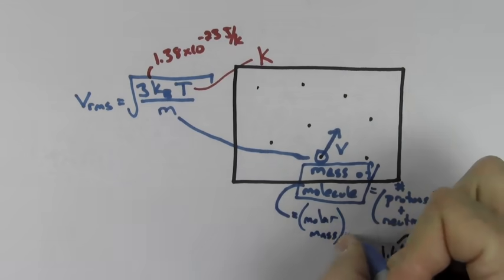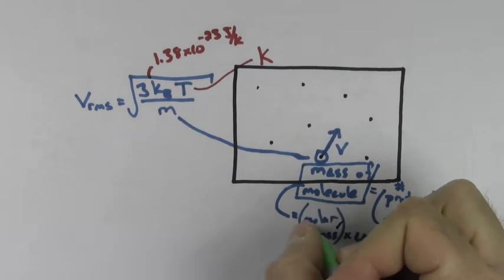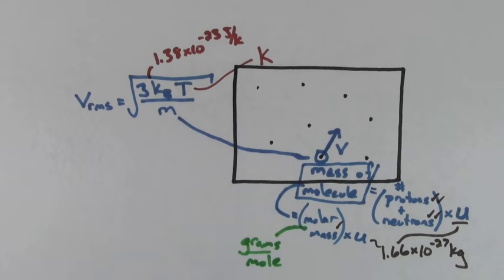Another way to find the mass of a molecule is to take the molar mass and multiply by one AMU. The molar mass is defined to be the number of grams per mole of that substance. Even though molar mass is measured in grams per mole, when you multiply it by the atomic mass unit, you get the mass of the molecule in kilograms.